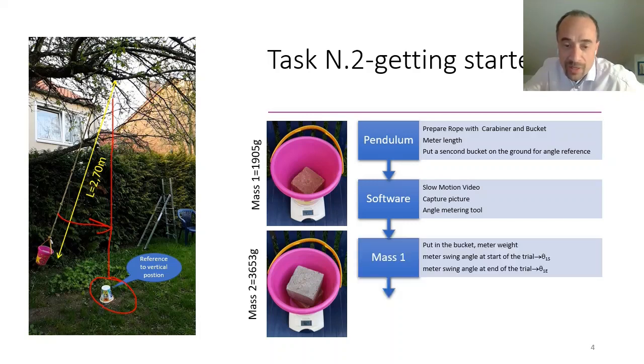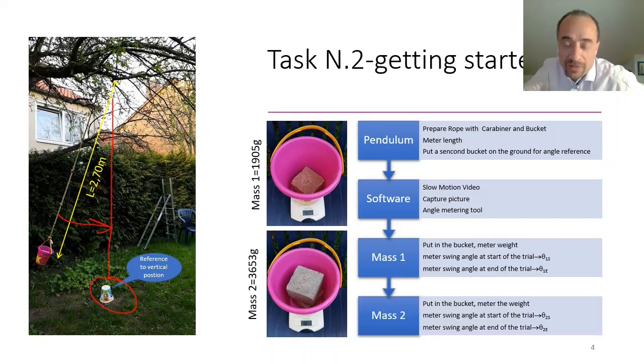For the mass number first, we put the mass in the bucket. We measure the weight. Then we measure the angle at the beginning of the trial and at the end of the trial. And the same we do for the mass number 2.